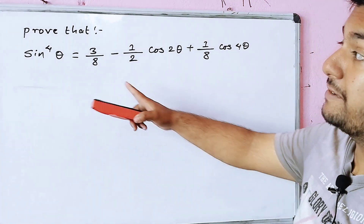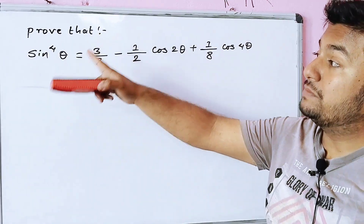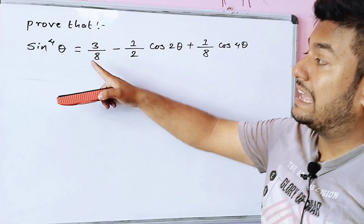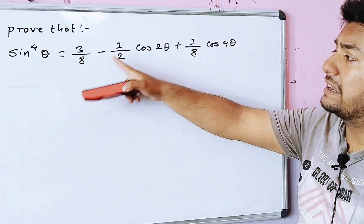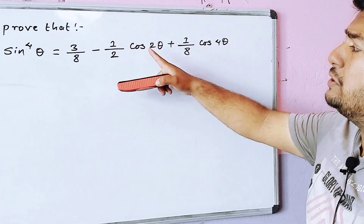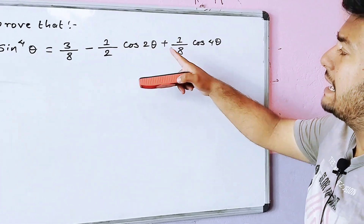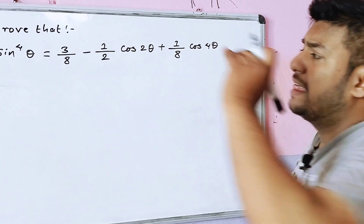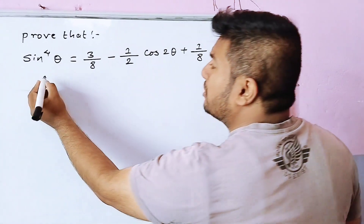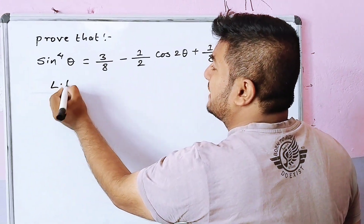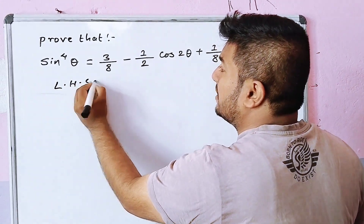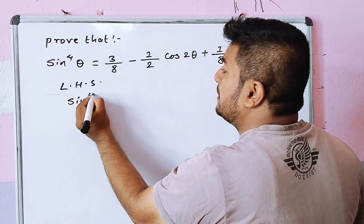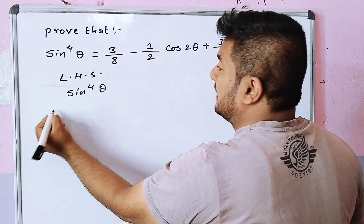The question is that sin to the power of 4θ is equal to 3 by 8 minus 1 by 2 cos 2θ plus 1 by 8 cos 4θ.